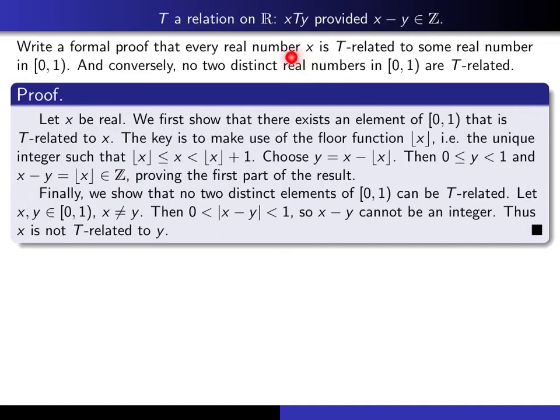Now we just simply have to prove that if we give ourselves two distinct elements of [0,1), that they can't possibly be T-related. Okay, so let's let x and y be two elements of [0,1), different from each other. Well then, the distance between them has to be strictly positive, because they're different from each other, and strictly less than 1, because they both lie in this interval. And since there are no integers between 0 and 1, it's impossible for x minus y to be an integer. So it follows that x and y are not T-related, and so that completes the proof.